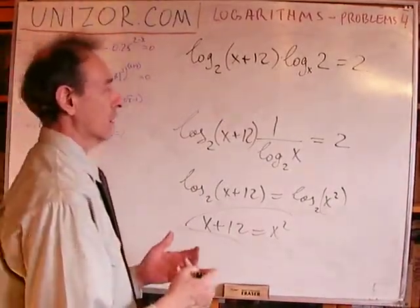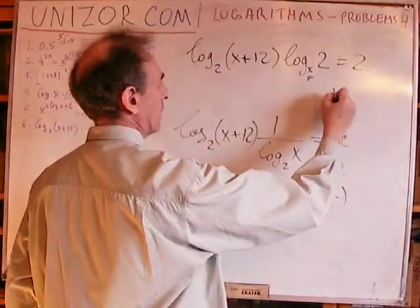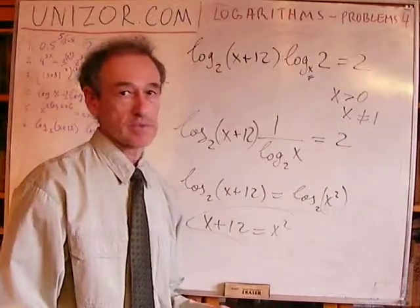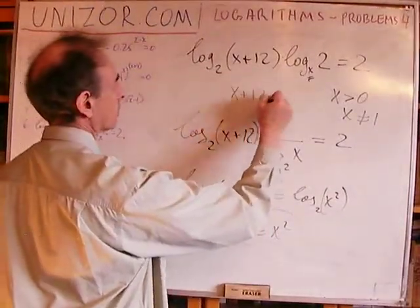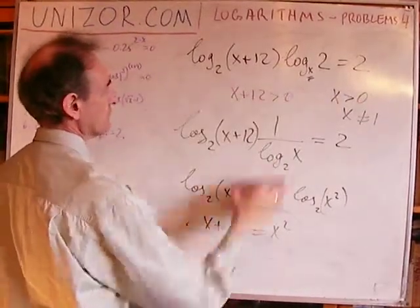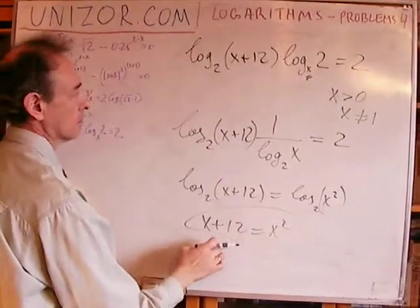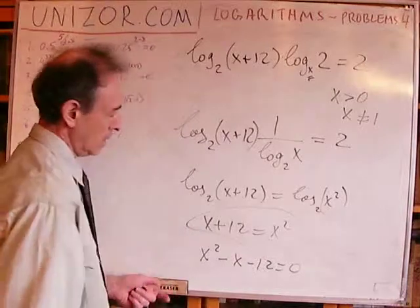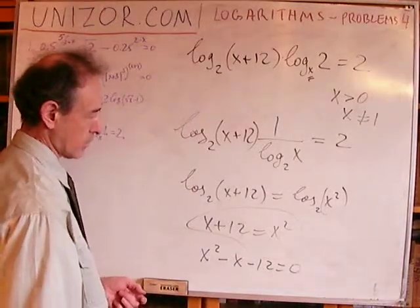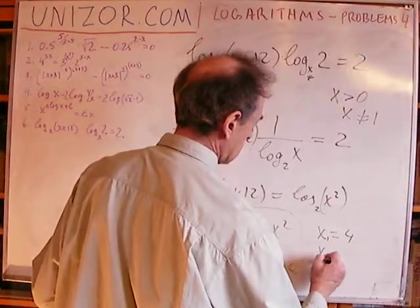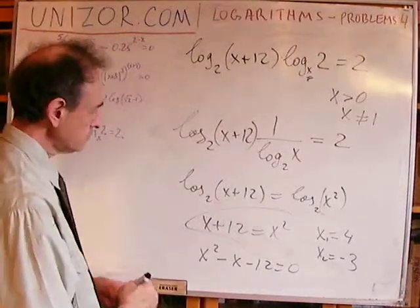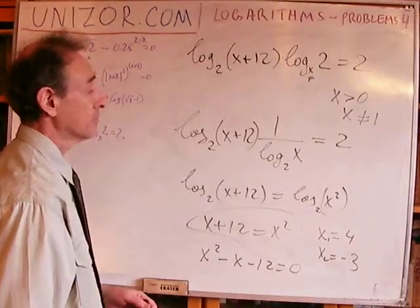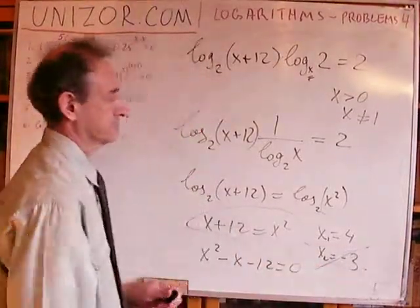The restrictions are: x greater than 0 and x not equal to 1, since those are the only allowed bases for logarithms. Also x plus 12 must be greater than 0, but that's automatically satisfied. The quadratic x² minus x minus 12 equals 0 gives solutions x equals 4 and x equals minus 3. x equals minus 3 is not valid because of the condition x greater than 0. So the only valid solution is x equals 4.